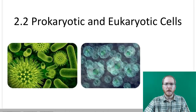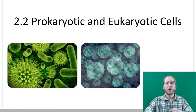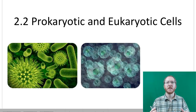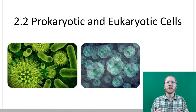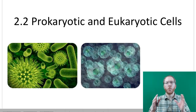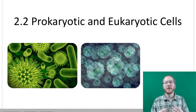Welcome to section 2.2, where we're going to discuss the differences between prokaryotic cells and eukaryotic cells. When we first look at cells, there are really two big categories. A lot of times people like to think they're plant and animal cells, but plant and animal cells are both eukaryotic cells — they're both one big, broad group of cells.